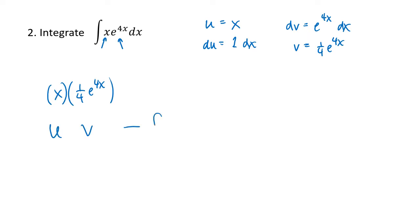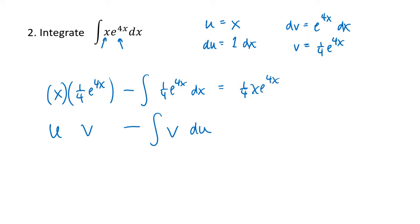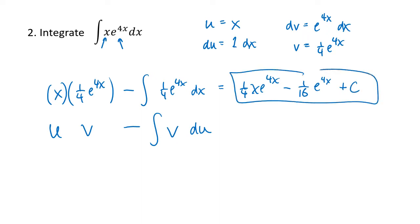So we have uv minus the integral of v du: that's x times one-fourth e to the 4x, minus the integral of one-fourth e to the 4x dx. That's one-fourth x e to the 4x. Pulling out the one-fourth and taking the antiderivative of e to the 4x gives us another factor of one-fourth — that'll give us one-sixteenth e to the 4x, plus c. And we're done.